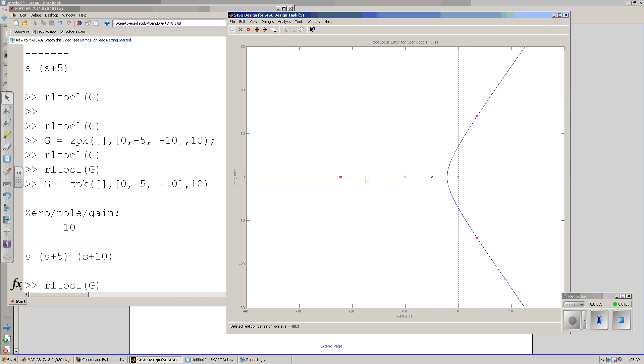If I look at zeros, poles repel, zeros attract. If I take the zero and slide it around, I'm attracting the root-locus plot, pulling it towards the zero.